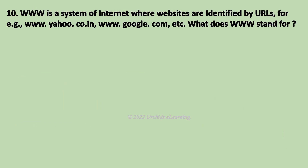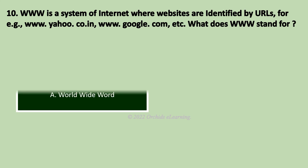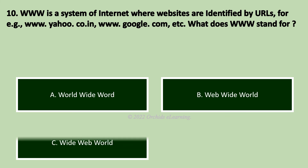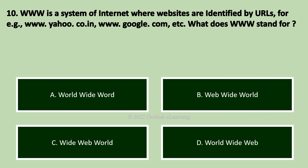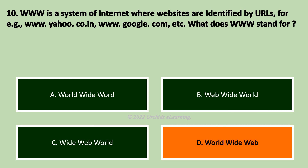WWW is a system of the internet where websites are identified by URLs, for example www.yahoo.co.in and www.google.com. What does WWW stand for? Answer D: World Wide Web.